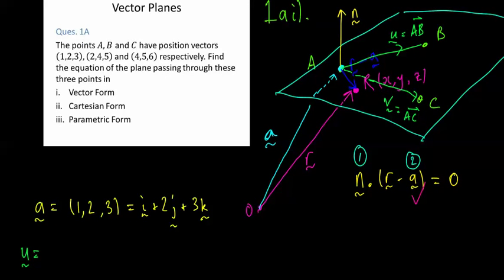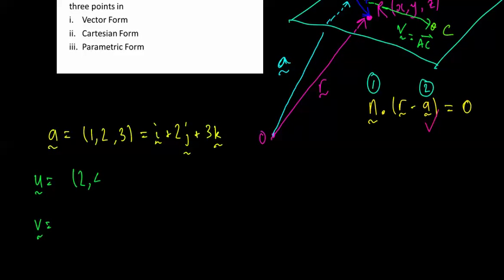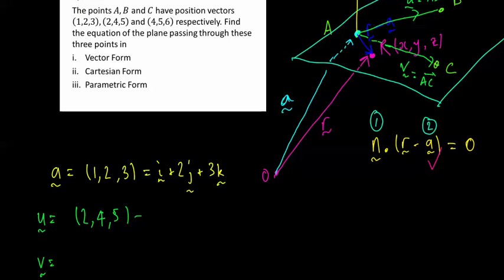Well, u is equal to a, b. So, it's the point b minus a. So, (2,4,5) minus (1,2,3). So, this vector will be, I'll write in i, j, k notation, 2 minus 1, so i, 4 minus 2, so plus 2j, 5 minus 3, so plus 2k.